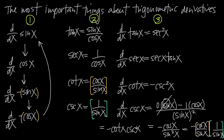Ideally we'd memorize this formula so when we see cosecant of x we can go straight to its derivative. But if we can't remember it and know cosecant equals 1 over sine, we can always use quotient rule. That same process works for tangent, secant, and cotangent. The most important thing is the sine-cosine progression, second most important is knowing tangent, secant, cotangent, and cosecant in terms of sine and cosine, and best of all is memorizing the derivatives directly.